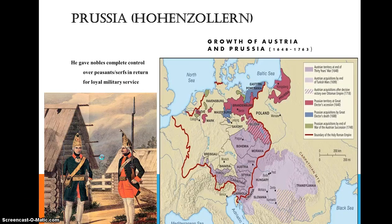Then we have the Prussian state — the growth of Austria and Prussia. Here's the map to look at this. This is all a little bit confusing, in that Prussia doesn't even exist anymore. What comes out of it ends up being a state such as Germany later on.